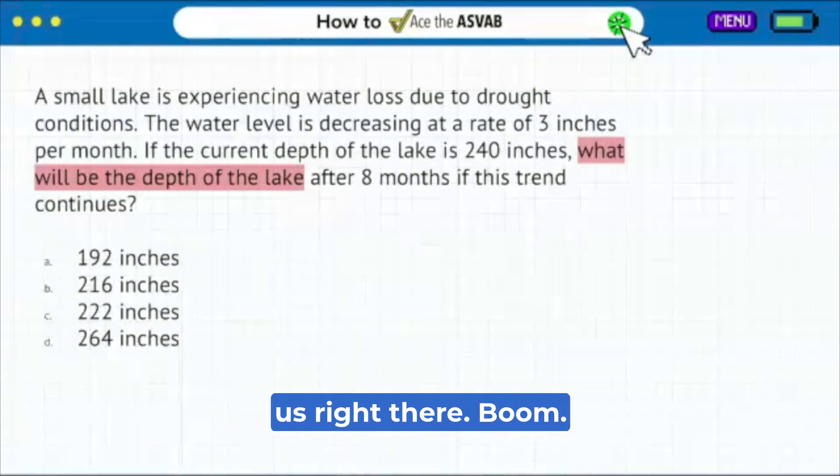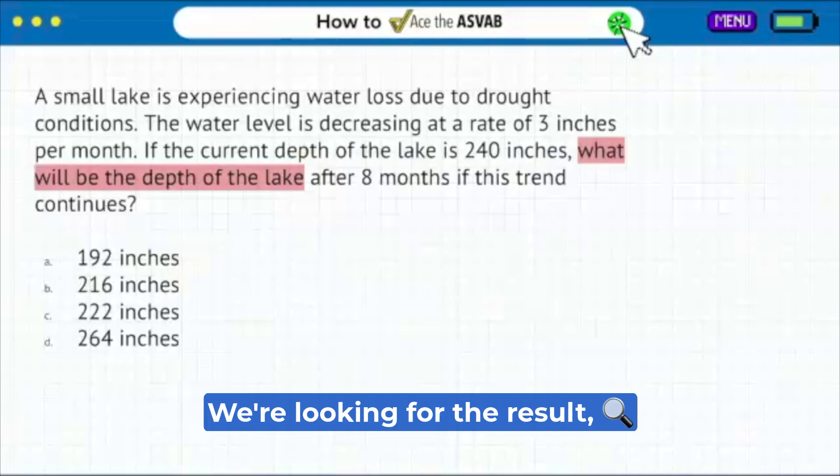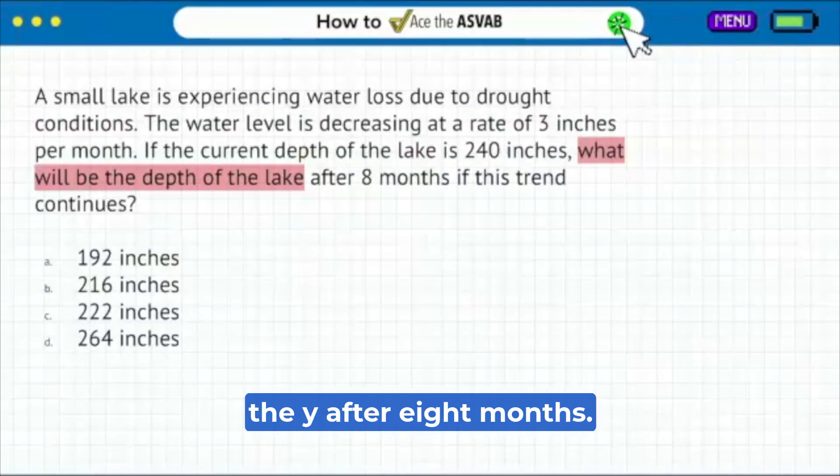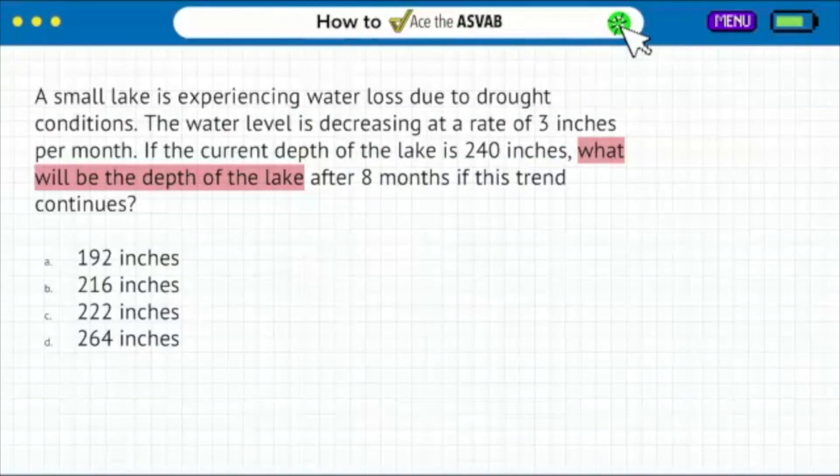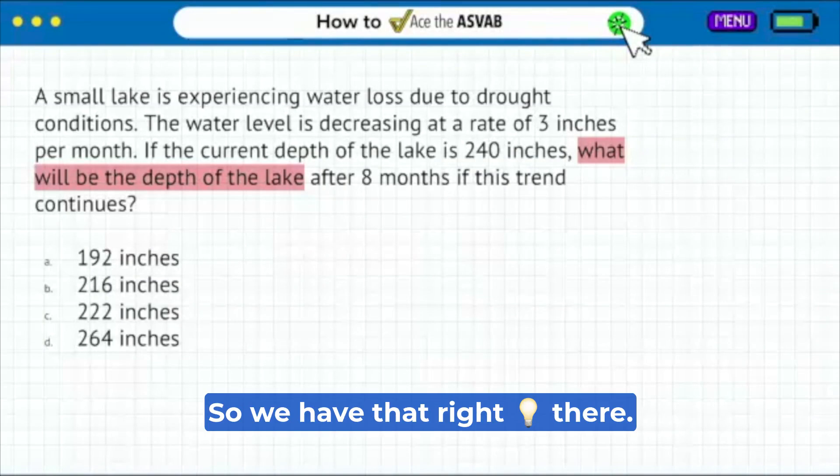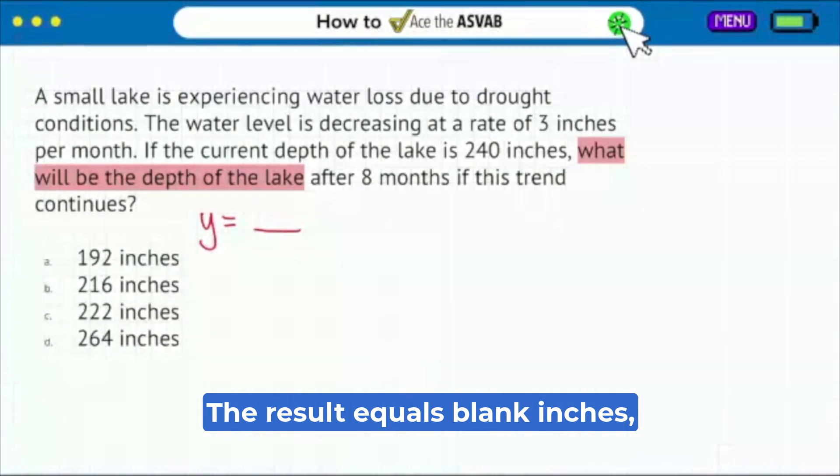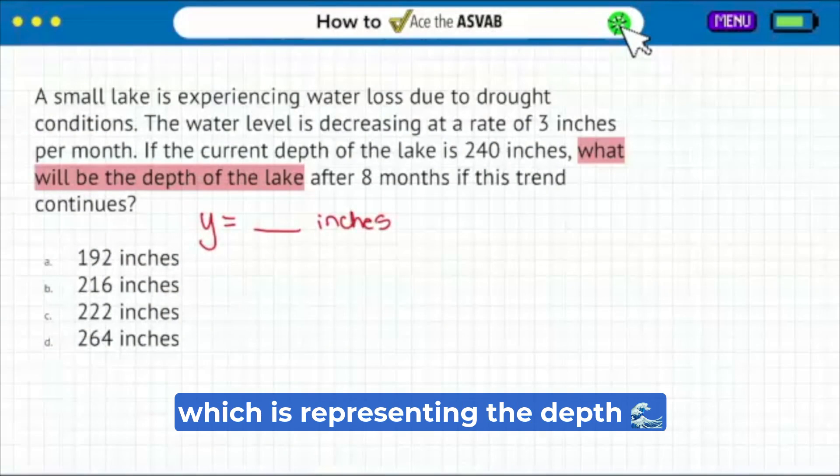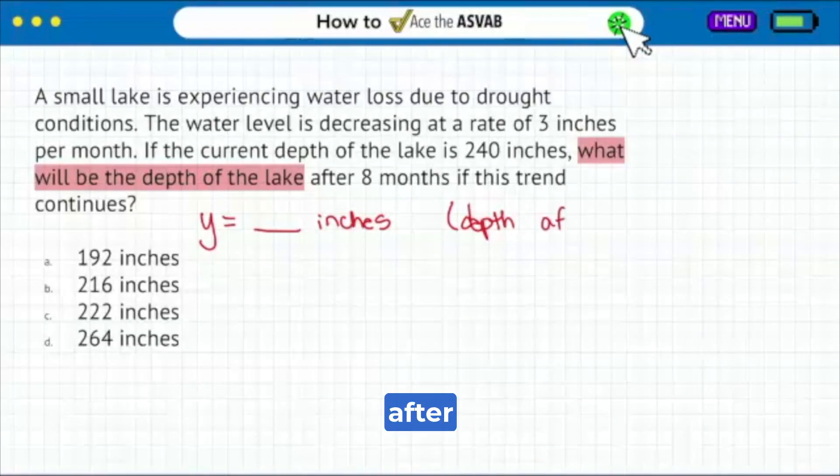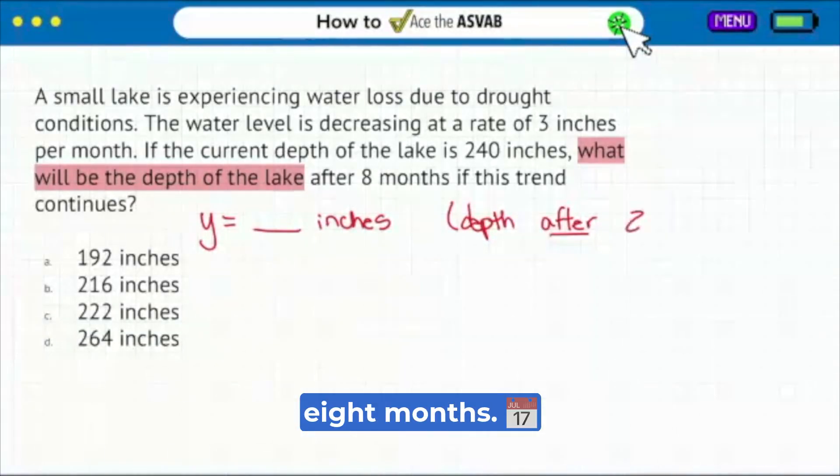That's where we specifically want to focus. That's going to tell us right there, we're looking for the result, the y after eight months. So we have that right there. We're looking for the y, the result equals blank inches, which is representing the depth after eight months.